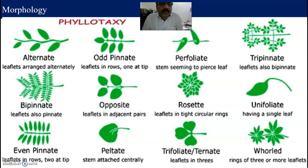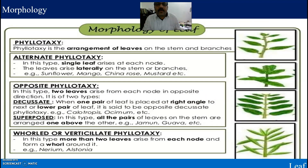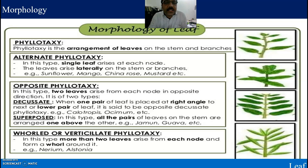Dear students, good morning. Today we are going to discuss another important aspect of morphology. Last class we were discussing about the different types of phyllotaxy. Phyllotaxy is the arrangement of leaves on the stem and branches. There are different types: alternate phyllotaxy, opposite phyllotaxy, and whorled phyllotaxy. These are the topics we covered last class.